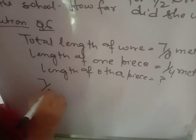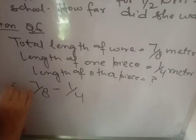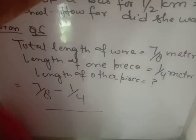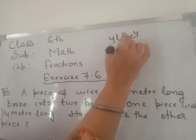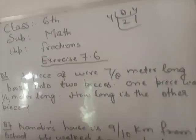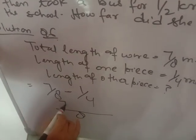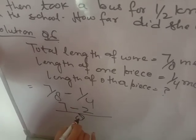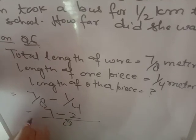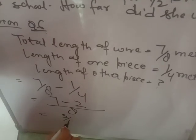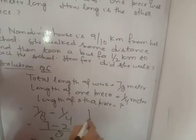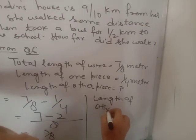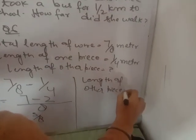The length of the other piece is equal to 7/8 minus 1/4. The LCM of 8 and 4 is 8. So, 7/8 minus 2/8 equals 5/8. The length of the other piece is equal to 5/8 meters.